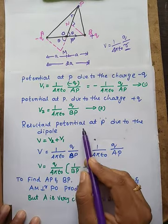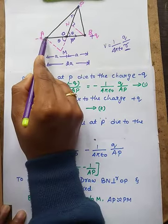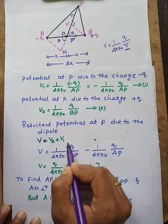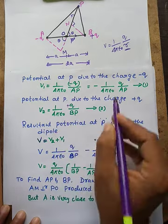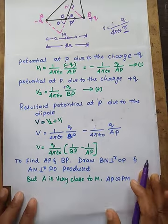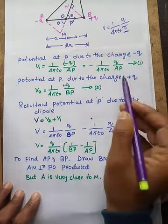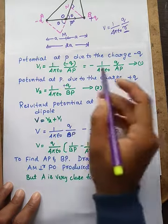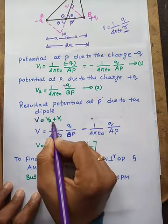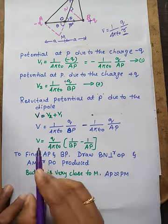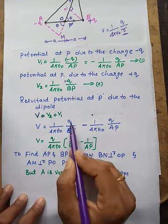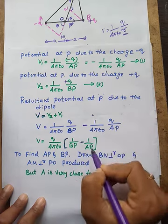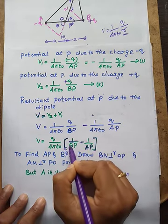Therefore the total potential at P is the sum: V = V2 + V1, which is the potential due to plus Q plus the potential due to minus Q. Substituting, the total potential V equals Q over 4πε₀ multiplied by (1/BP minus 1/AP). Since V1 carries a negative sign, plus into minus gives minus. This is equation number 3.